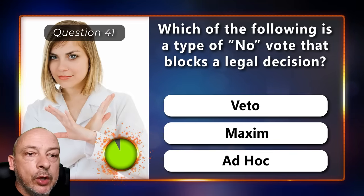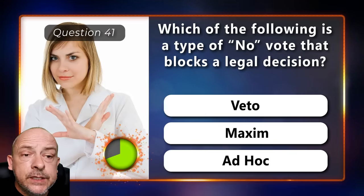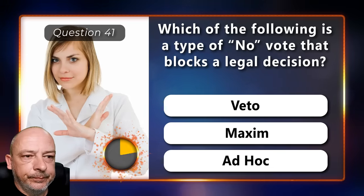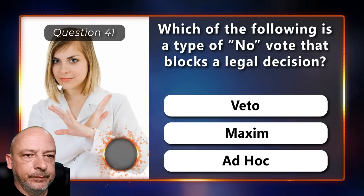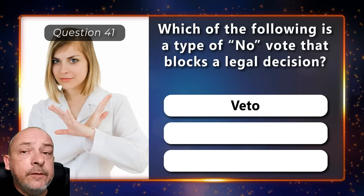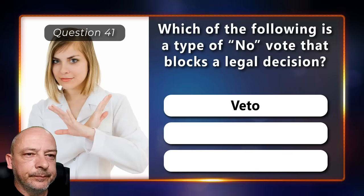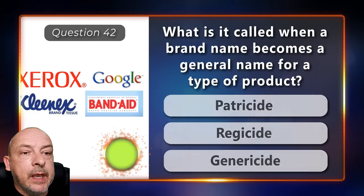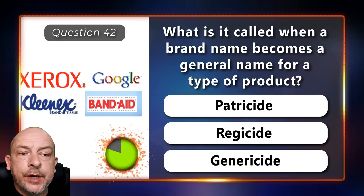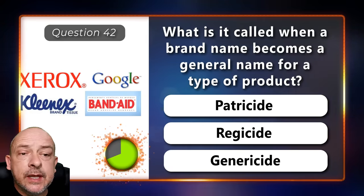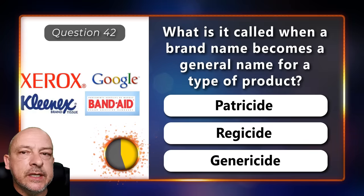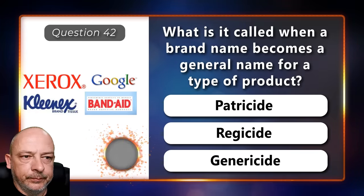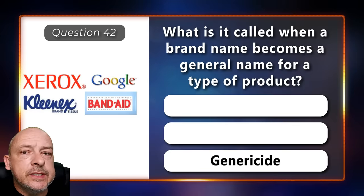Which of the following is a type of no-vote that blocks a legal decision — a veto, a maxim, or an ad hoc? A veto. What is it called when a brand name becomes a general name for a type of product — patricide, regicide, or genericide? The correct answer is genericide.